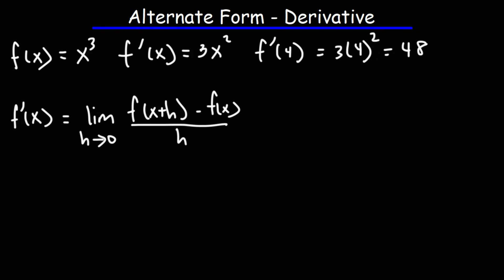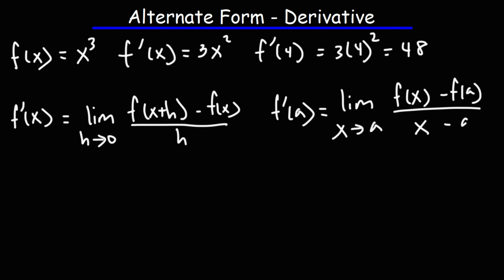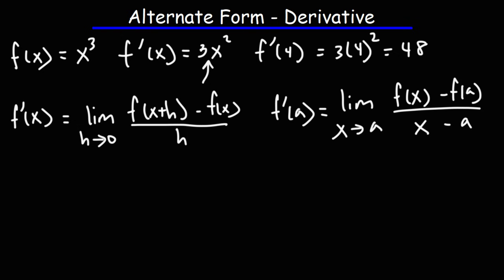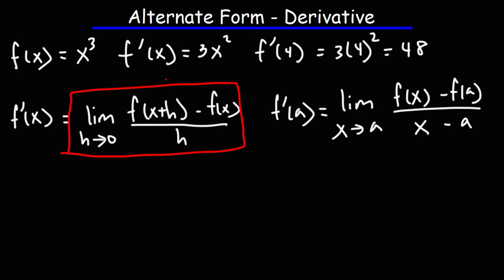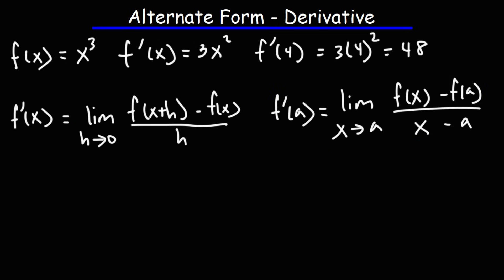The alternative form of the definition of the derivative is this equation: f prime of a is equal to the limit as x approaches a of f of x minus f of a, over x minus a. This form of the derivative will give you a number as opposed to a function that depends on x. Using this, you can get the slope of the tangent line, which is 48 when x is 4. This formula gives you the derivative as a function, and the alternative formula evaluates that derivative at some point where x equals a.